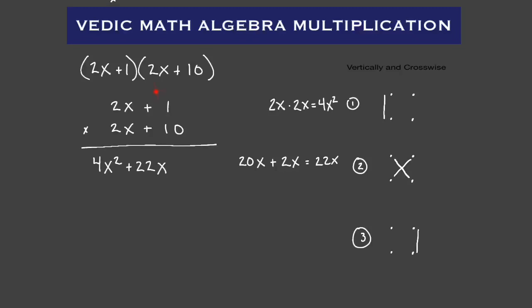Step number three, we multiply down the right-hand side: one times 10 equals 10. So we get our answer as four X squared plus 22 X plus 10.